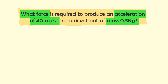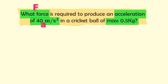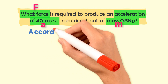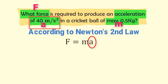We are given three variables: find force F, the value of acceleration A is 40 meters per second squared, and the mass M is 0.5 kg. According to Newton's second law of motion, F is equal to MA, where F is force, M is mass, and A is acceleration.